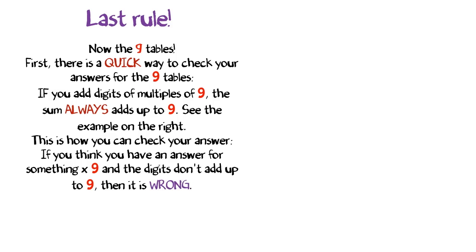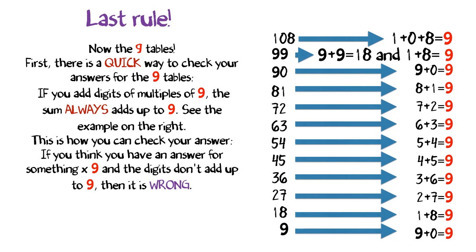Last rule. Now the 9 tables. First, there's a quick way to check your answers for the 9 tables. If you add digits of multiples of 9, the sum always adds up to 9. See the example on the right. This is how you can check your answer. If you think you have an answer for something times 9 and the digits don't add up to 9, then it's wrong.